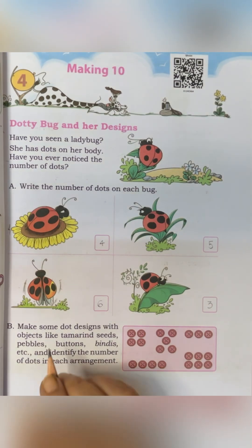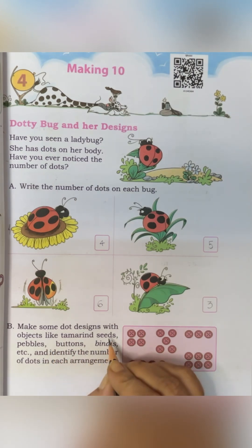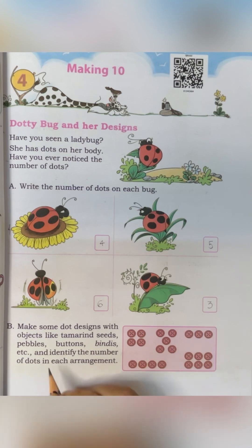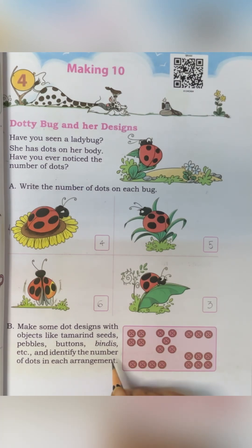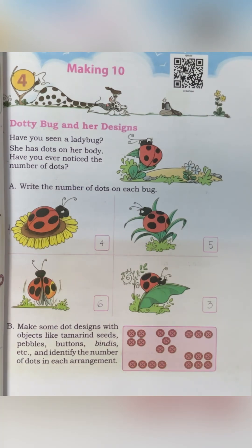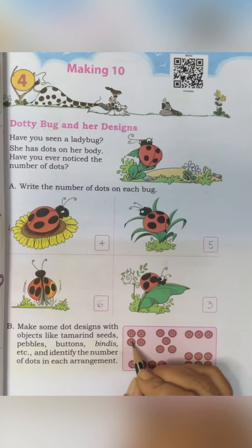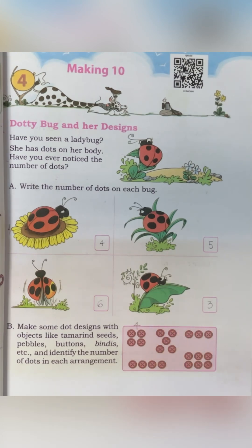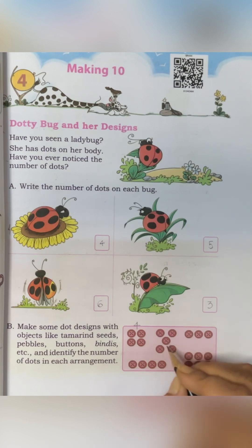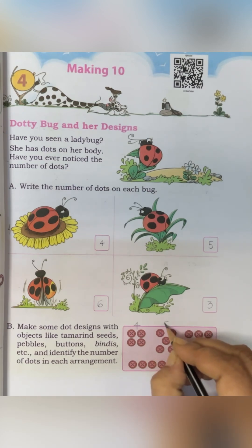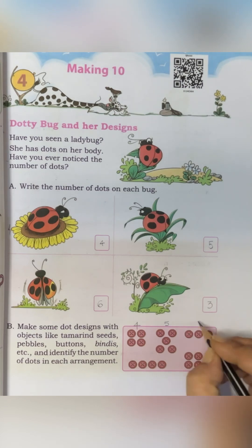Now, make some dot designs with objects like tamarind seeds, pebbles, buttons, bindis, etc., and identify the number of dots in each arrangement. You have to make arrangements using buttons, bindis, pebbles, or peanuts. See how they have done it here — they have made an arrangement with buttons. How many buttons are there? 1, 2, 3, 4 — there are 4. In this: 1, 2, 3, 4, 5 — 5. Then: 1, 2, 3 — 3.